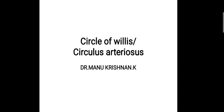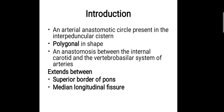Hi everyone, this is Dr. Manu Krishnanke and today we will be discussing about the topic: the blood supply of the brain. The blood supply of the brain is carried out by the circle of Willis, or a structural arrangement called the circulus arteriosus. It's an arterial anastomotic circle present in the interpeduncular cistern, and it is a polygonal anastomosis between the internal carotid and the vertebro-basilar system of arteries.